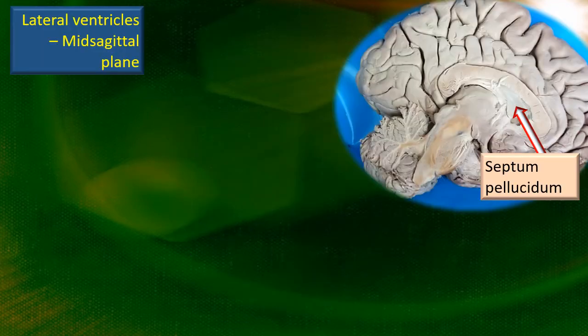Let's have a look at a mid-sagittal section of the cerebrum. Obviously, the lateral ventricles are on either side of the mid-sagittal plane and therefore not going to be seen. Nevertheless, watch this particular item — I have shown the septum pellucidum. The moment I remove the septum pellucidum, the cavity of the lateral ventricle becomes apparent. Let's do it and see it in the next slide.